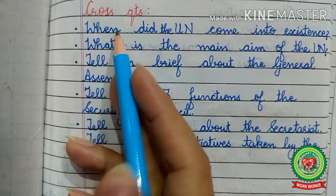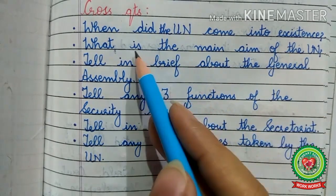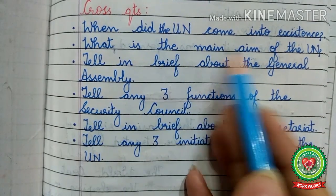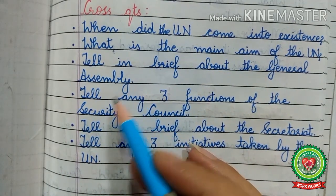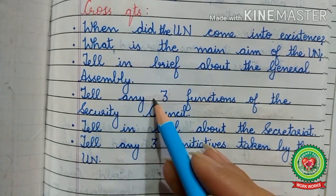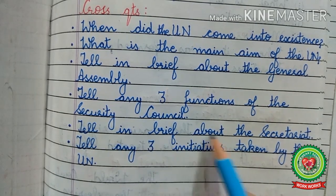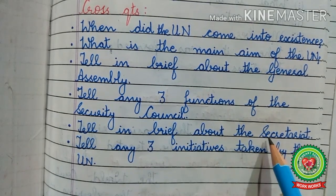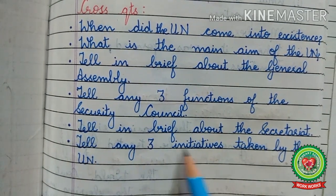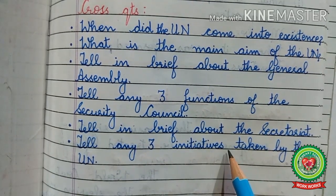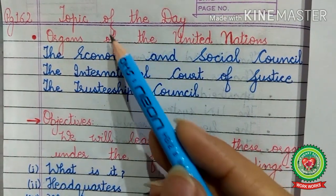Now answer these cross questions: When did the UN come into existence? What is the main aim of the UN? Tell in brief about the General Assembly. Tell any three functions of the Security Council. Tell in brief about the Secretariat. And the last question: tell any three initiatives taken by the UN.